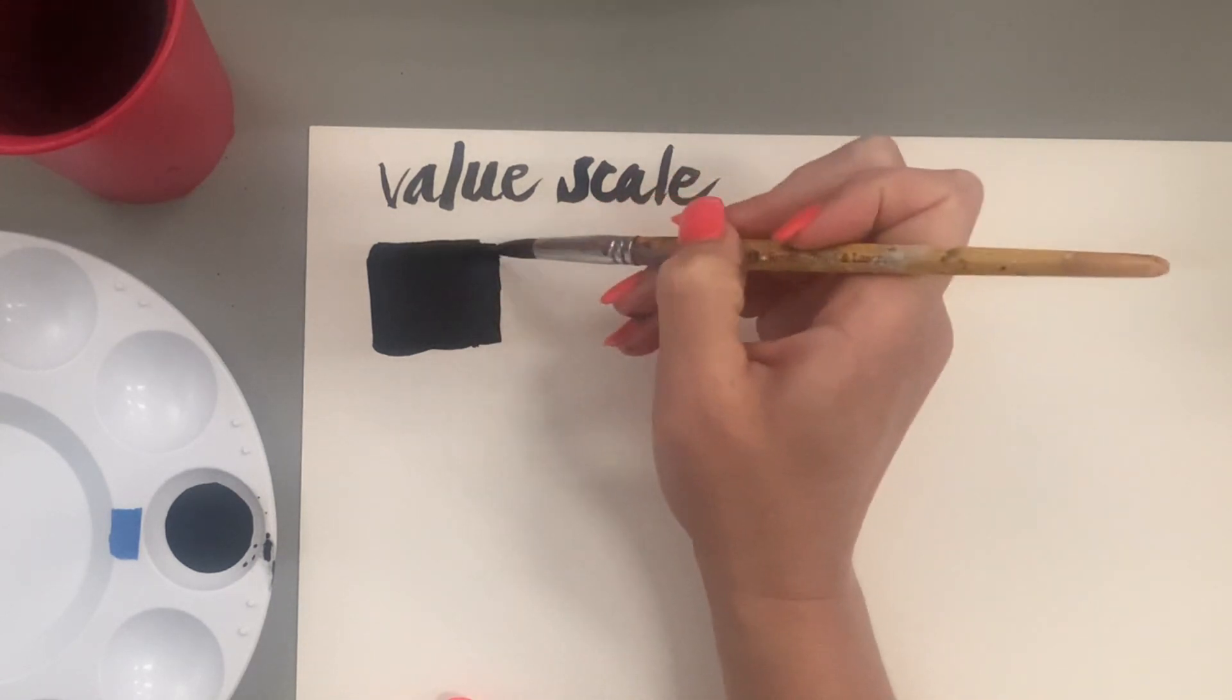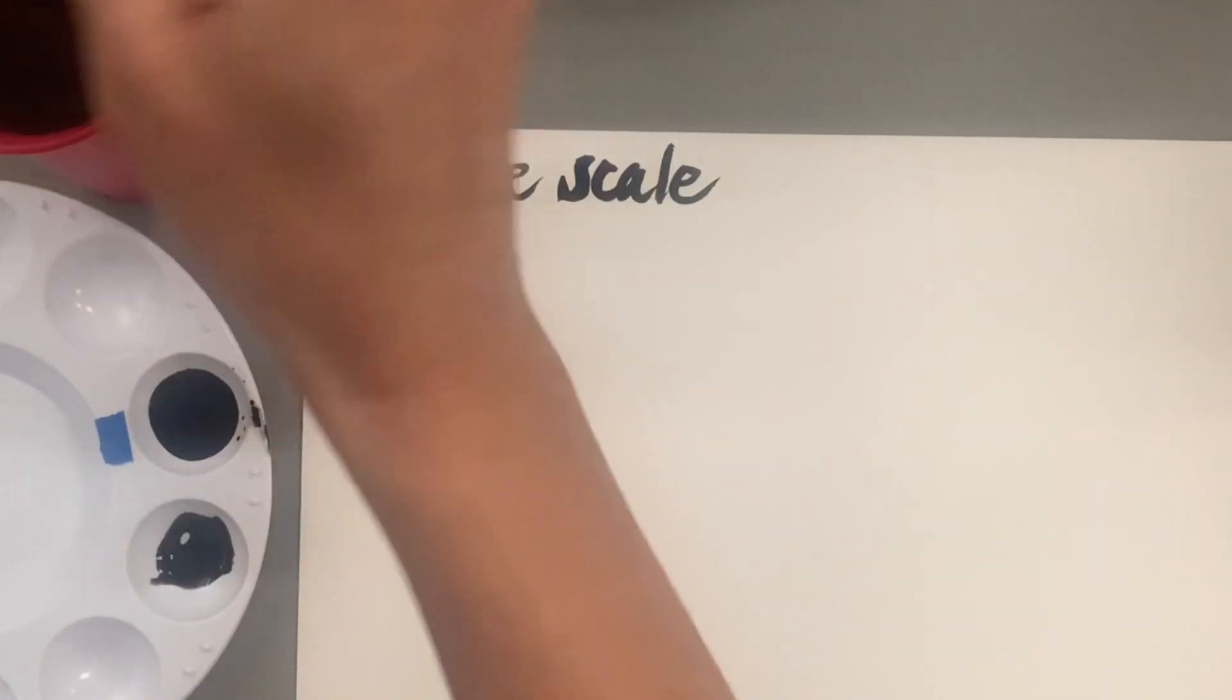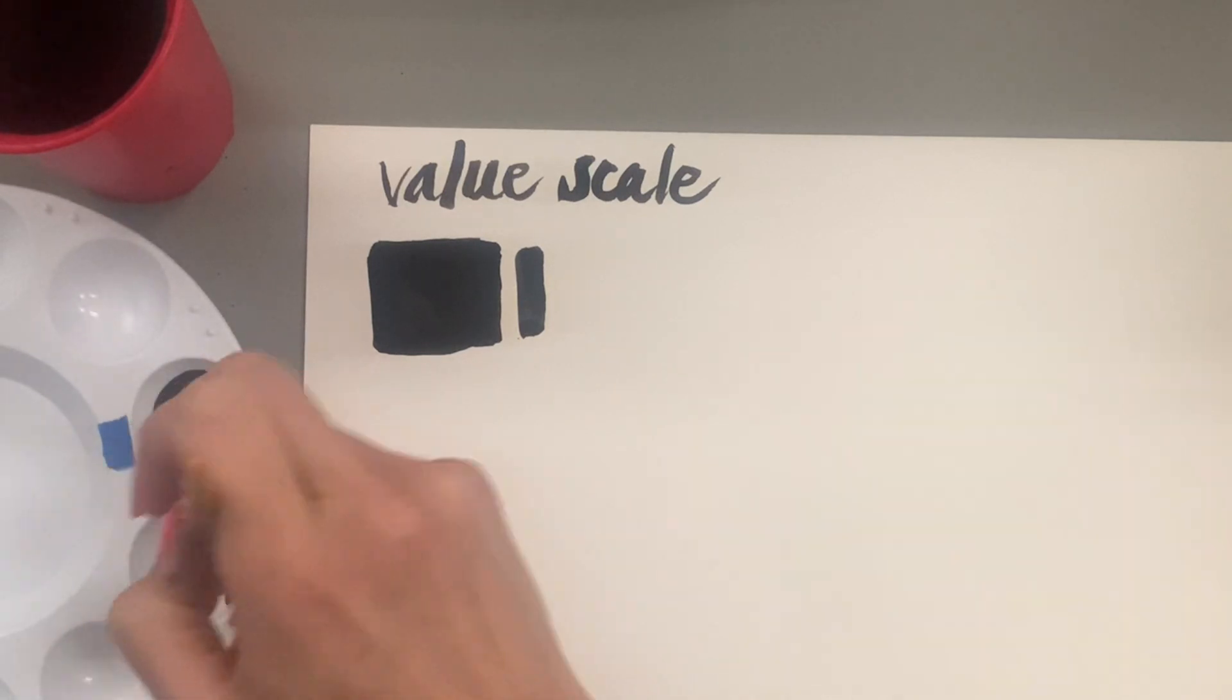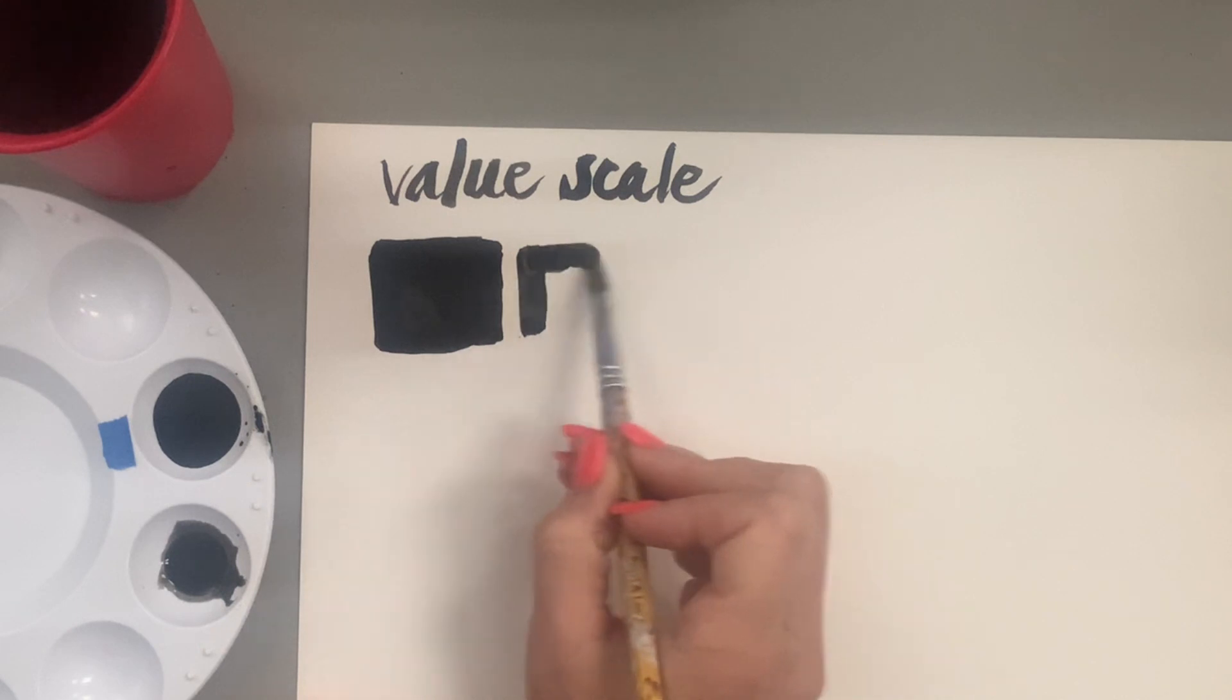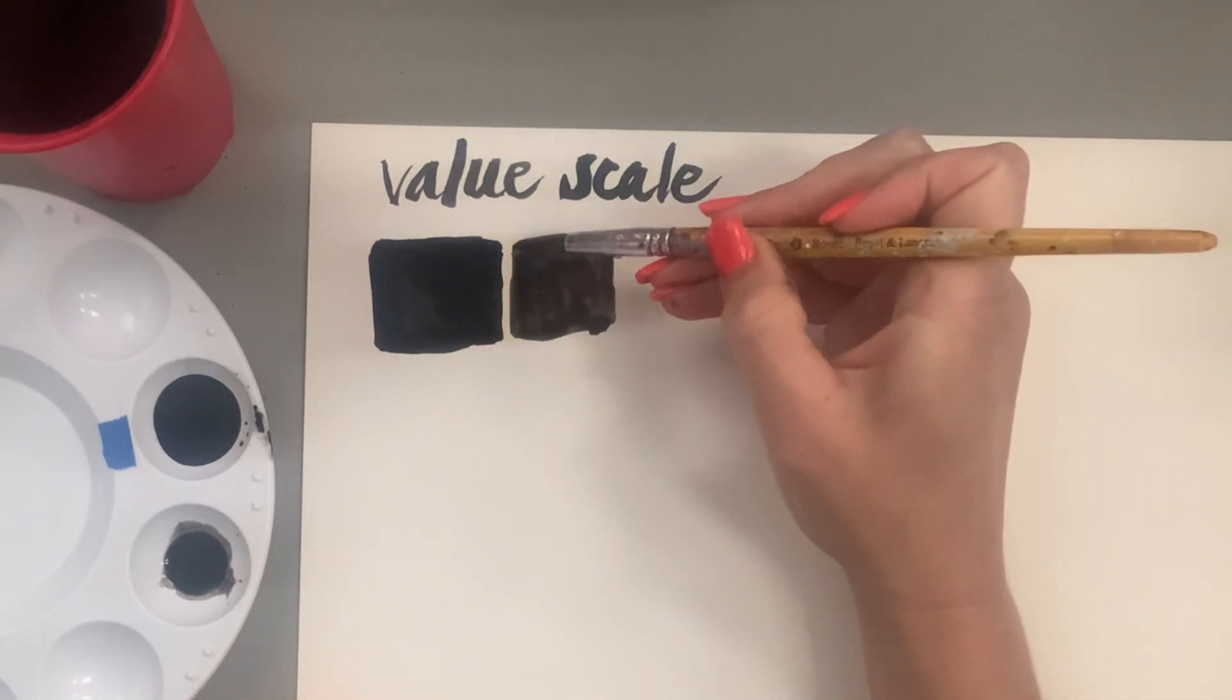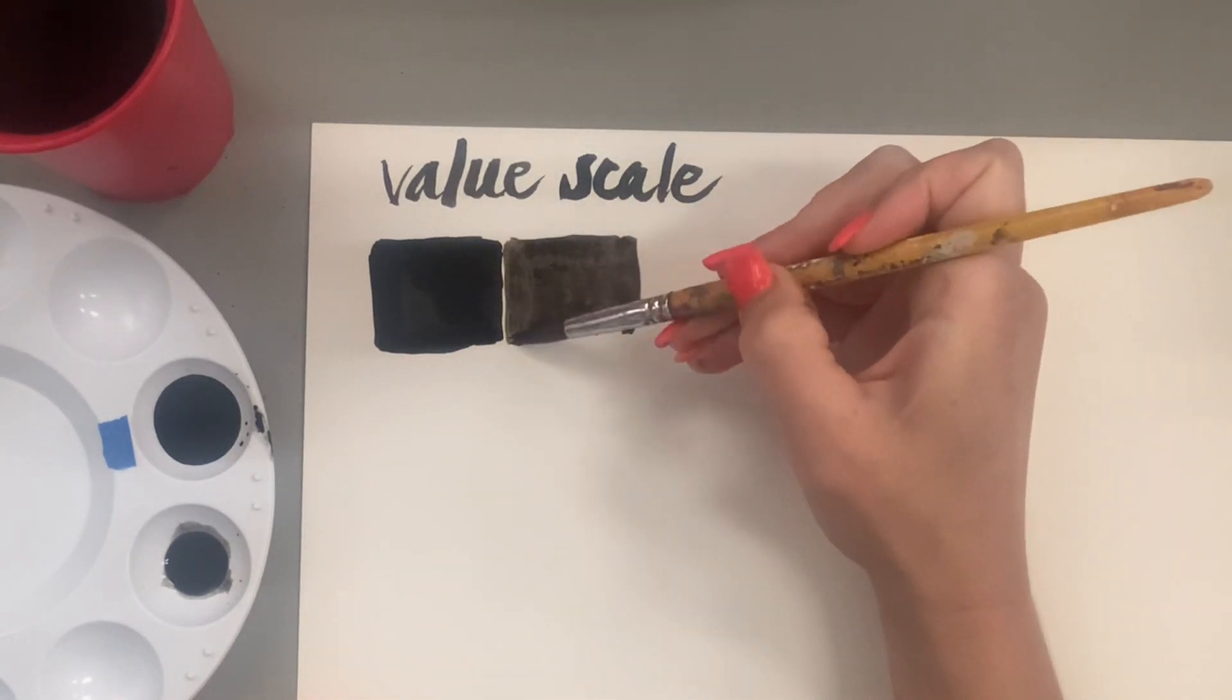I'm just going to paint a square, overlapping, and you can see that the Bristol really does a great job of keeping the ink contained and not spreading out. This is going to be our first section, which is black. Then I'm going to take my brush and in the next well add a little bit of water and test it. That's still pretty dark, so I'm going to water it down just a little bit more and test again. That looks like a very nice dark gray.